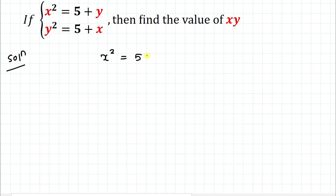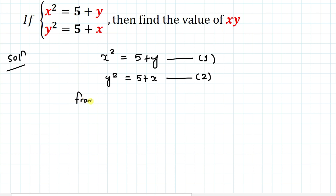Without any delay, let's start the solution. We have x squared equals 5 plus y — let's call this equation 1. Our second equation is y squared equals 5 plus x — let's call this equation 2. From equation 1, bringing y to the left hand side, we can write x squared minus y equals 5 — let's call this equation 3.